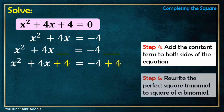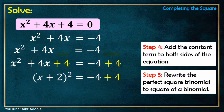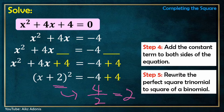Step 5: Rewrite the perfect square trinomial as a square of a binomial. Our perfect square trinomial here is x² + 4x + 4. Written as a square of a binomial, this becomes (x + 2)². The 2 comes from dividing b by 2 — our b is 4, so 4 divided by 2 is 2.